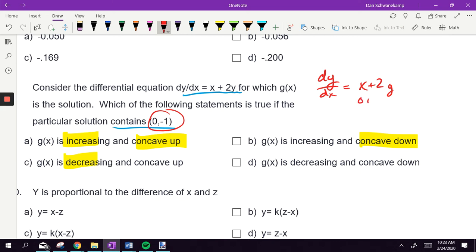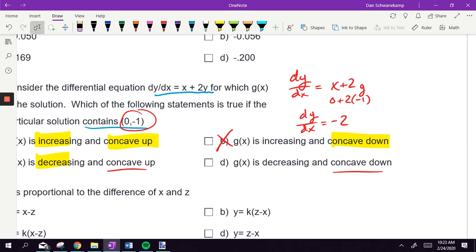So now I need to decide, is it concave up or concave down? How do I determine concave up or concave down? Second derivative. So I got to take the derivative of this. The derivative dy dx is y prime, or y double prime, sorry. What's the derivative of x going to get me? One. What's the derivative of 2y going to get me? Two, but then I just took the derivative of y, so the derivative of y is dy dx. We need to include that second derivative there. It's like an implicit differentiation.